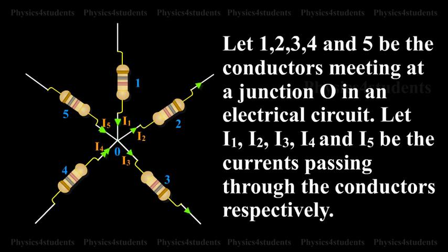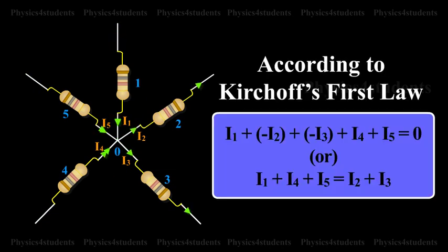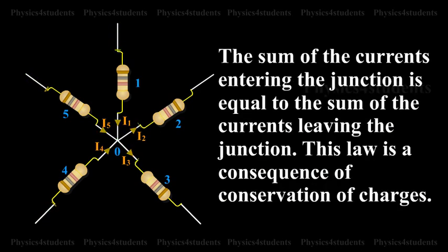Let 1, 2, 3, 4, and 5 be the conductors meeting at a junction O in an electrical circuit. Let i1, i2, i3, i4, and i5 be the currents passing through the conductors respectively. According to Kirchhoff's First Law, i1 + i2 − i3 + i4 + i5 = 0. The sum of the currents entering the junction is equal to the sum of the currents leaving the junction. This law is a consequence of conservation of charges.